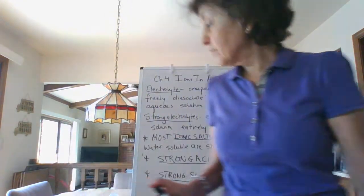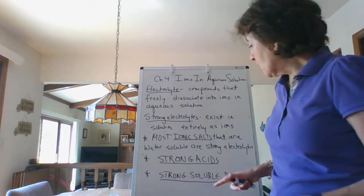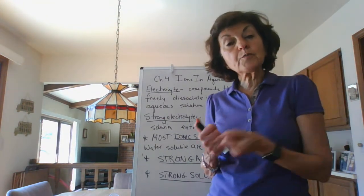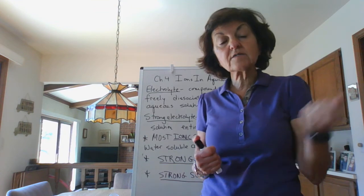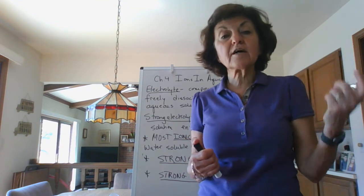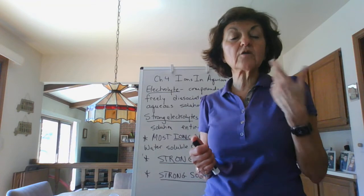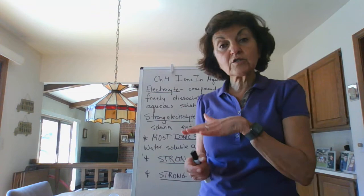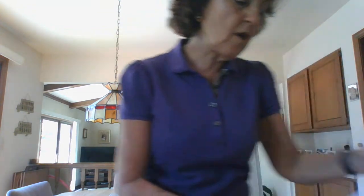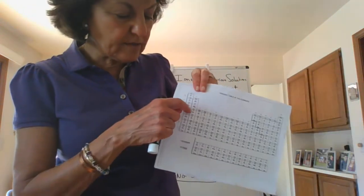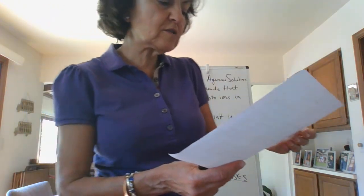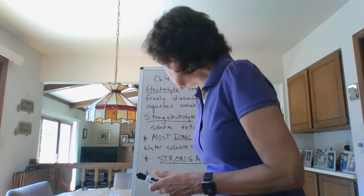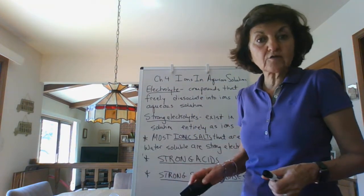The other strong electrolytes are the strong soluble bases. Strong soluble bases are Group 1A metal hydroxides: lithium hydroxide, sodium hydroxide, potassium hydroxide, cesium hydroxide, rubidium hydroxide — those are strong soluble bases. Also heavy Group 2A, meaning calcium and heavier: calcium hydroxide, strontium hydroxide, and barium hydroxide. That's, in a nutshell, the rules for the strong electrolytes.